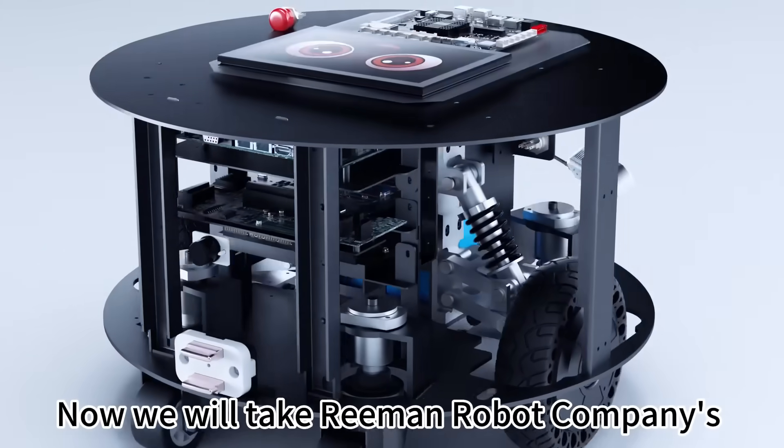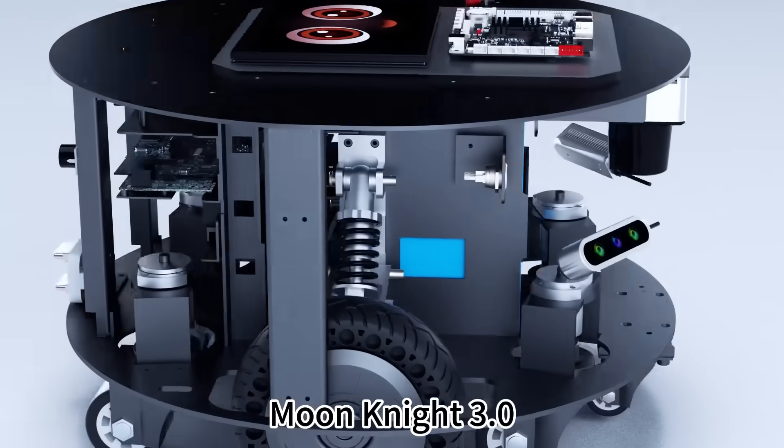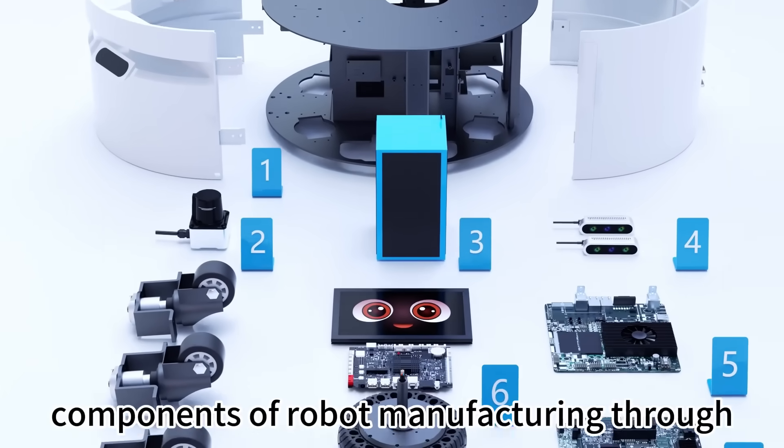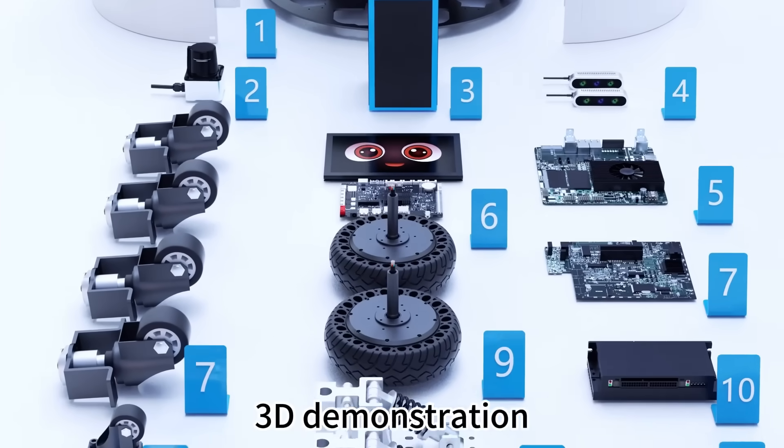Now, we will take Re-Eman Robot Company's Moon Knight 3.0 product as an example to understand some of the main components of robot manufacturing through 3D demonstration.